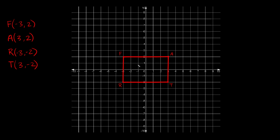There are two really important things you need to understand when talking about dilations. One of them is the center of dilation, normally denoted by the letter C. This point is really important because it's where you start measuring everything from. The position of your center of dilation matters a lot — if I change the position, it completely changes what the dilation looks like. Sometimes the center of dilation is on the outside of the shape, just floating somewhere outside.